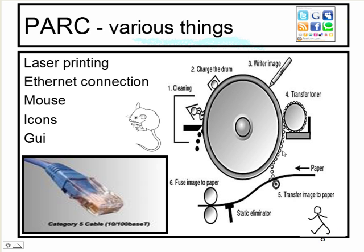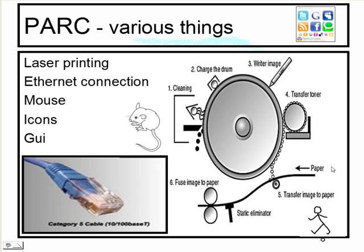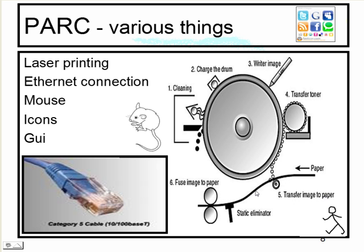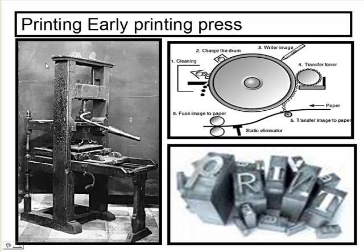You should work on the process of laser printing. You clean the drum, you charge the drum with an electrical charge, you write the image onto the drum, and then you transfer the toner onto that image. You then pass the paper over the drum, transfer the image to the paper, eliminate static from the paper, and fuse the image to the paper. If you look at early printing, a printing press was used — you inked up printing blocks, put them into a mold or holder, and pulled them down onto paper.